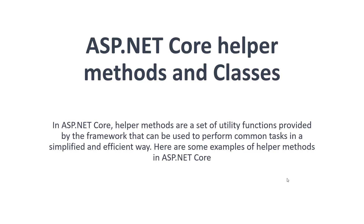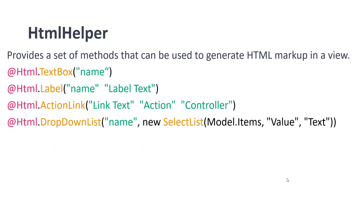Here are some examples of helper methods in ASP.NET Core. The first one is the HTML helper, which provides a set of methods that can be used to generate HTML markup in a view. HTML helper provides methods like TextBox, Label, ActionLink, and DropDownList. Here is the syntax for these methods to generate HTML markup in a view on the browser.